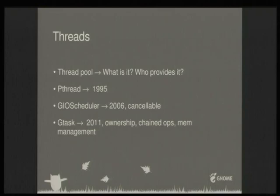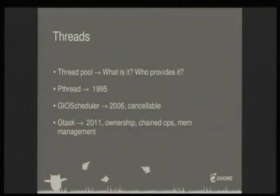Then in 2011, glib introduced GTask. GTask is similar to the GIO scheduler but better because it introduced the concept of task ownership — an operation in a thread is owned by a task. This gives us better memory management and lets us chain operations more cleanly. So to recap: pthread 1995, GIO scheduler 2006, GTask 2011.